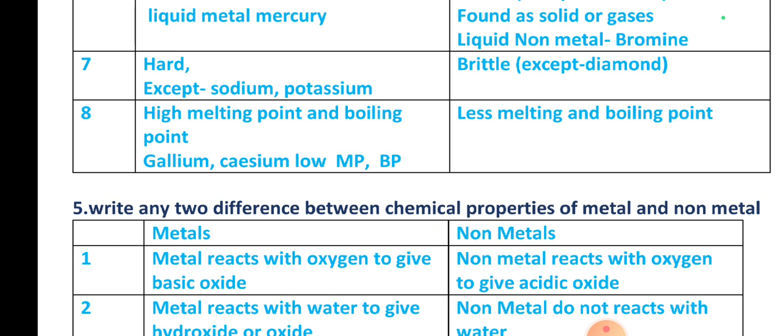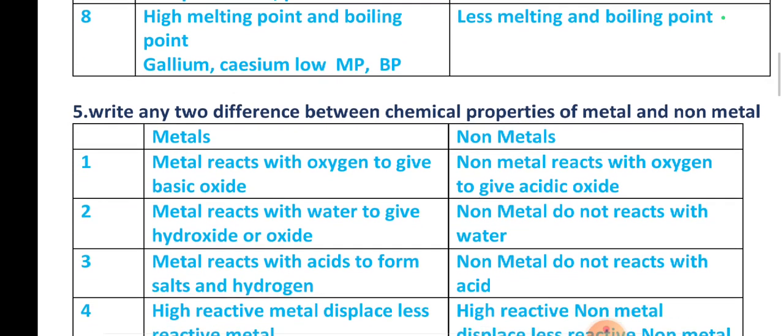Metals have high melting points and boiling points, while non-metals have low melting points and boiling points. Exceptions among metals include gallium and cesium, which have low melting points and boiling points.